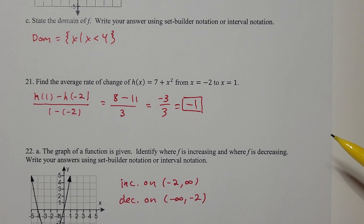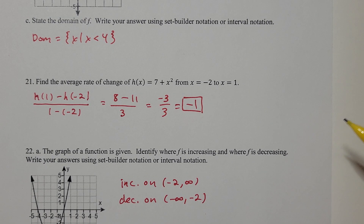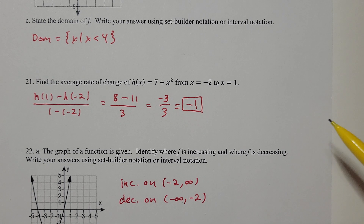The average rate of change is the same formula as the slope of a line. We'll look at slope and do a lot with lines in chapter 2, so this is kind of an intro to what's coming up later.